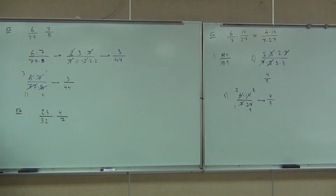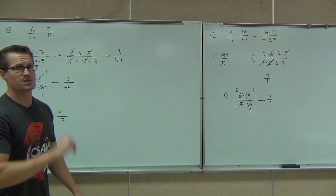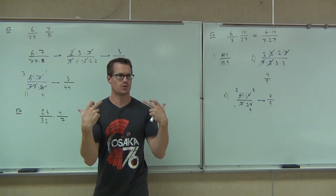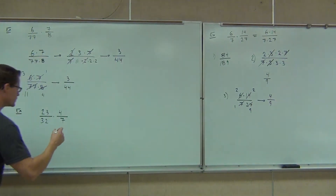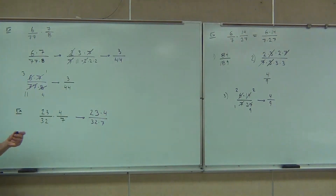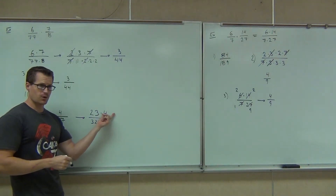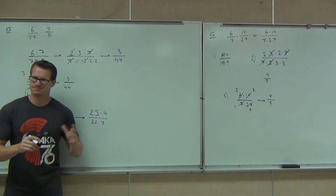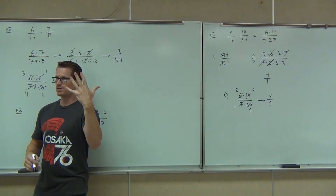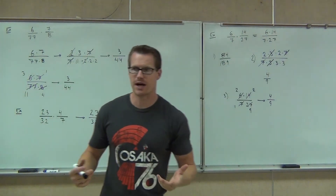We've got 23 over 32 times 4 sevenths. What is the first thing you always do when you're multiplying fractions? Make it into one fraction. If you want to just draw the line and put the dot in the dot — signifying that multiplication is multiplication of numerators and denominators — that's acceptable. Or rewrite it as 23 times 4 over 32 times 7. If we were doing prime factorization, we'd break 4 into 2 times 2, and 32 into five 2s — and that's why we lean towards just looking for a common factor to divide by.